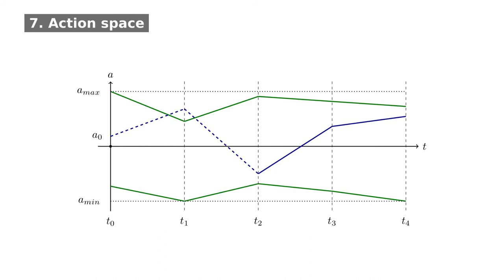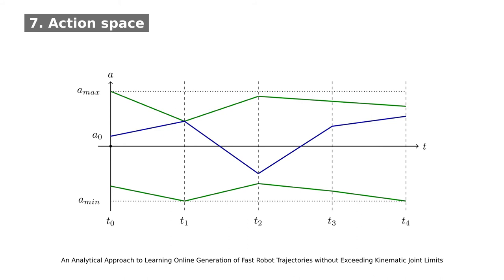To prevent the robot from exceeding joint limits, we calculate at each decision step the range of accelerations that can be safely executed. In this figure, the permitted range is represented by the green lines. If the predicted acceleration is outside of the permitted range, it is clipped to the closest admissible value. Details on the computation of the acceleration limits can be found in the paper referenced below.